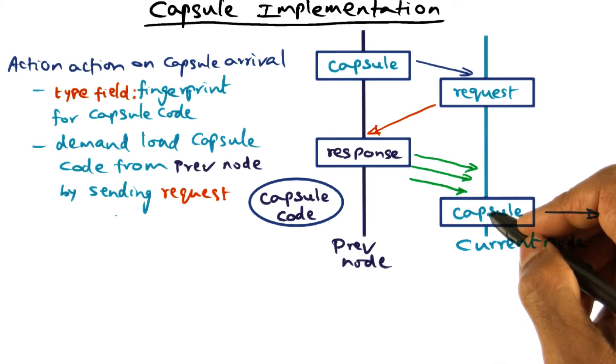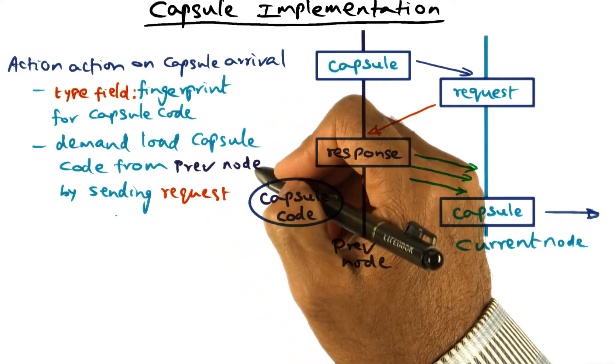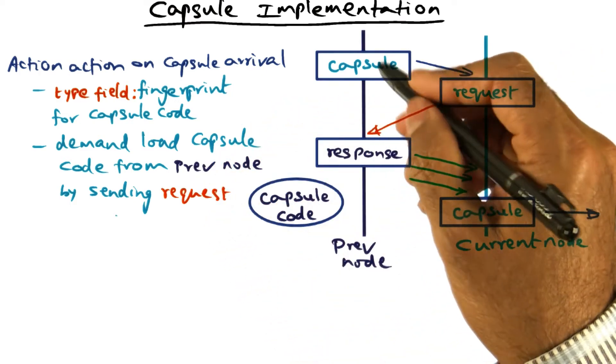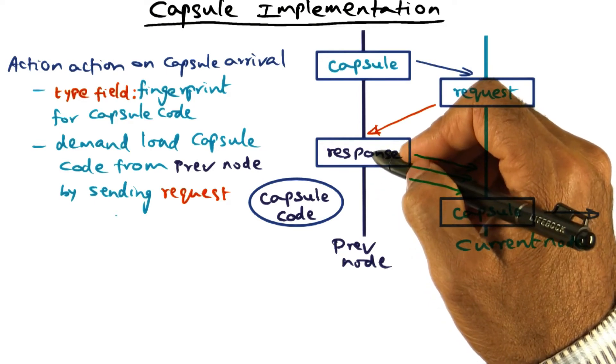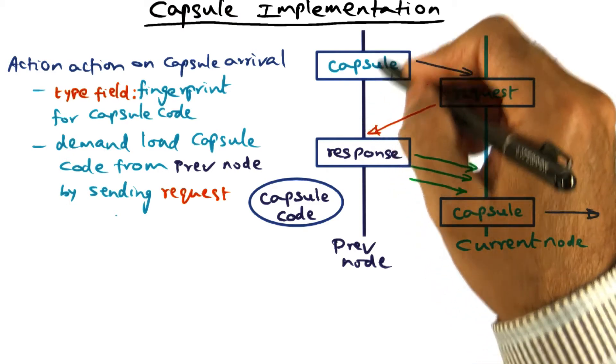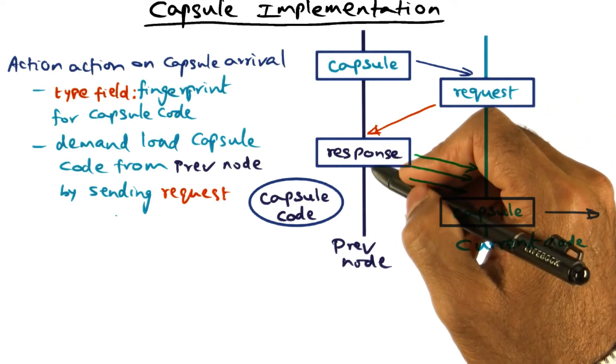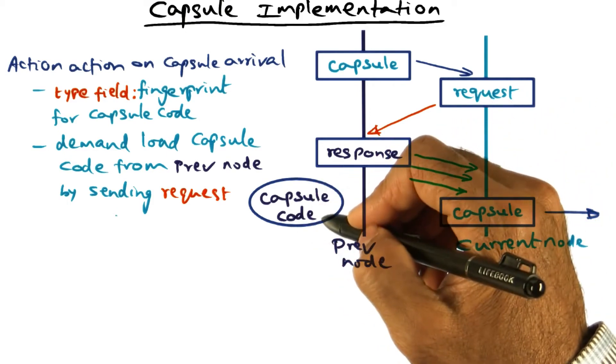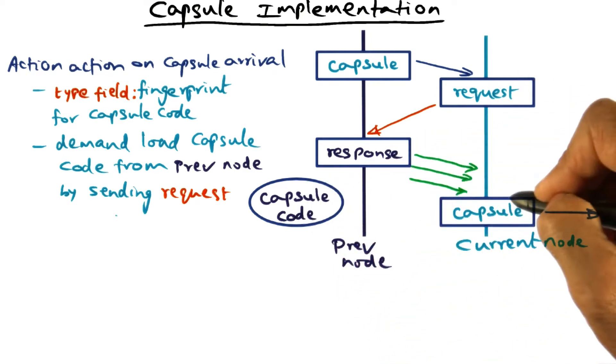On the other hand, if this capsule that arrived at this node is the first time that this node is seeing a capsule of this type, then obviously it's not going to have the code that corresponds to this type. In this case, what this current node is going to do is use the previous node field of the capsule and send a request to the previous node saying, hey, I got this capsule of this type, I don't have the code. Do you have the code? If you have, please send it to me. And when this request comes in, the previous node, obviously it has processed this capsule before.